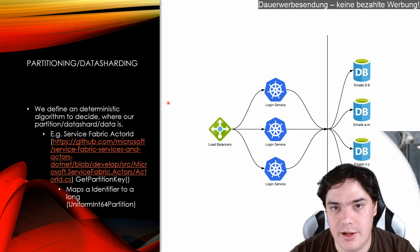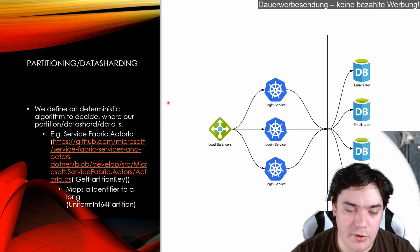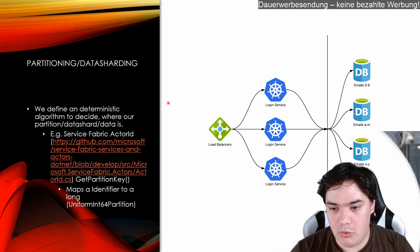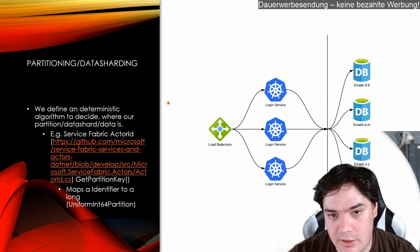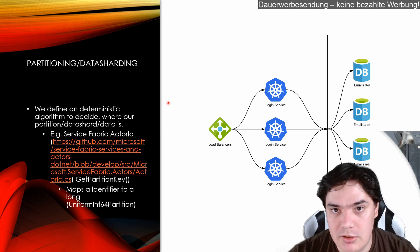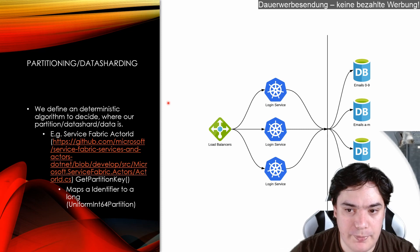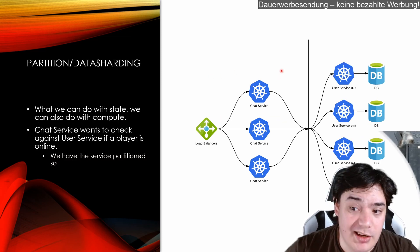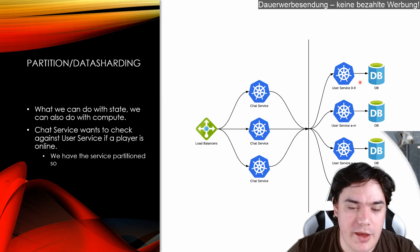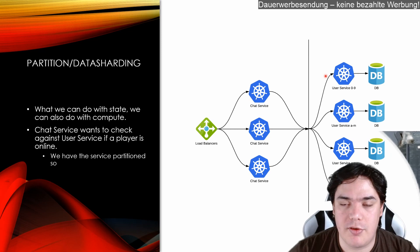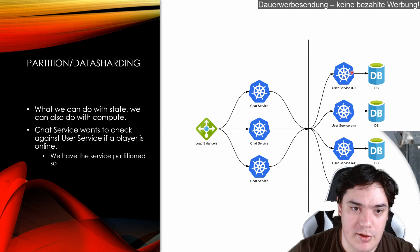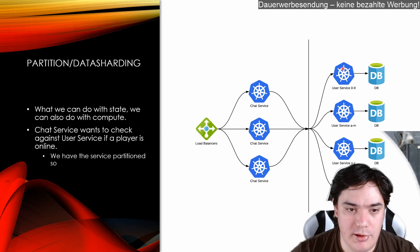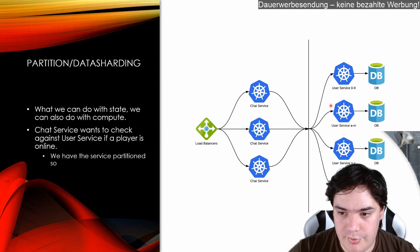They hash the identifier you give it — a string, GUID, or whatever — into a long value, and the hashing is deterministic: the same name always gives the same long value. There's a partition table that says which service handles which range, so depending on which side the hash comes out, it routes to service zero or service one. With 10 services, each gets one tenth of the full long min-to-max range. The service itself has its own database — in Service Fabric a stateful service uses its own disk — and we could do the same with Kubernetes.